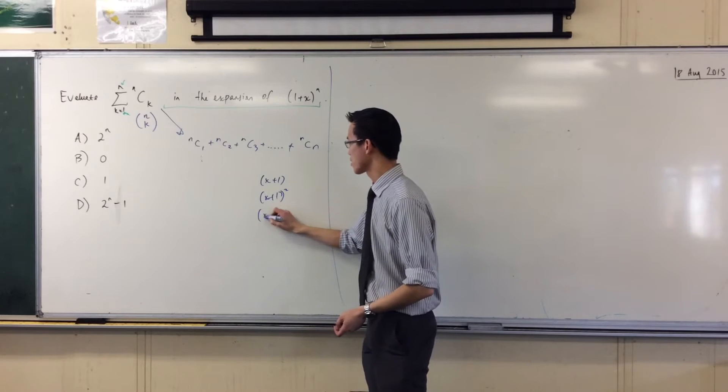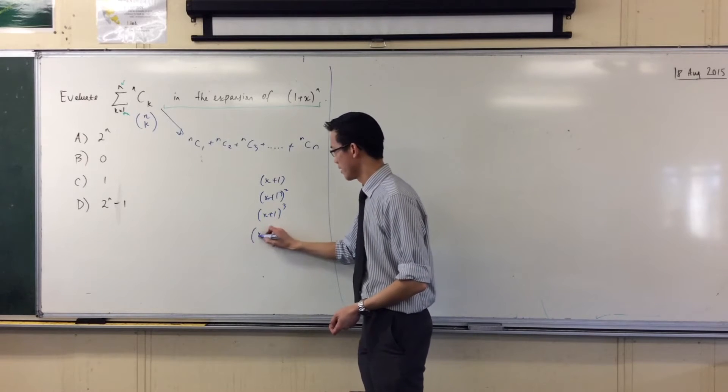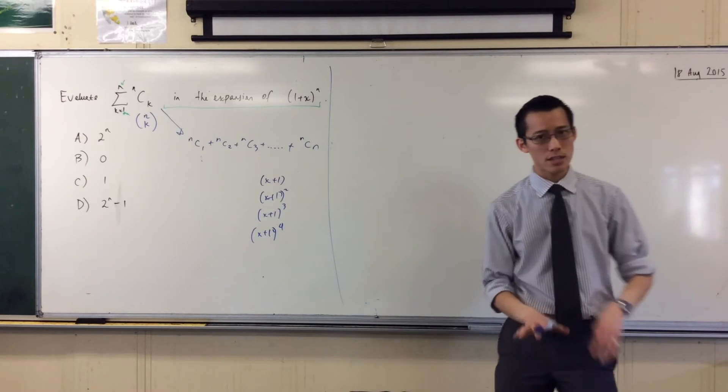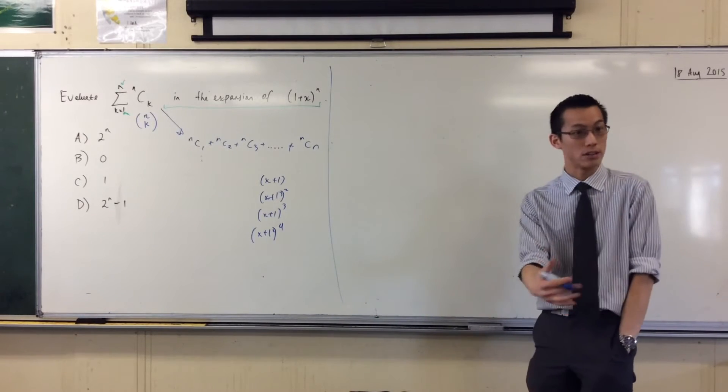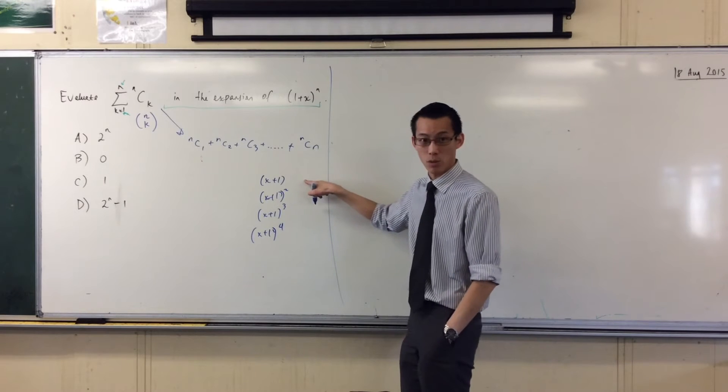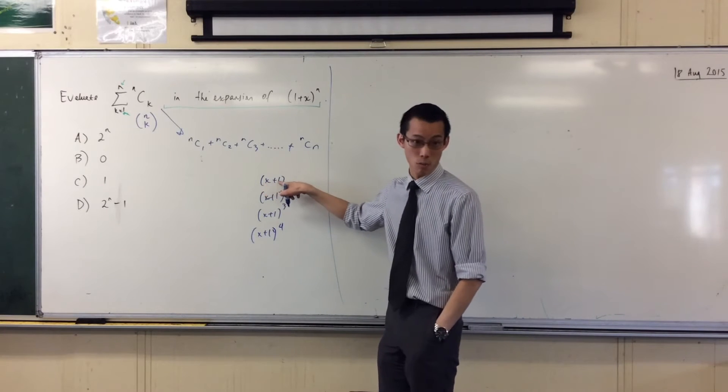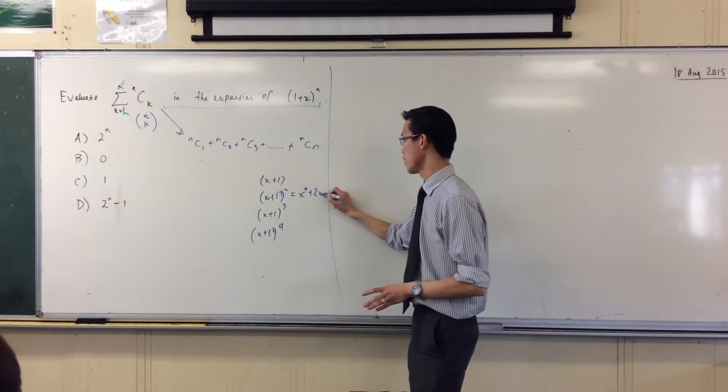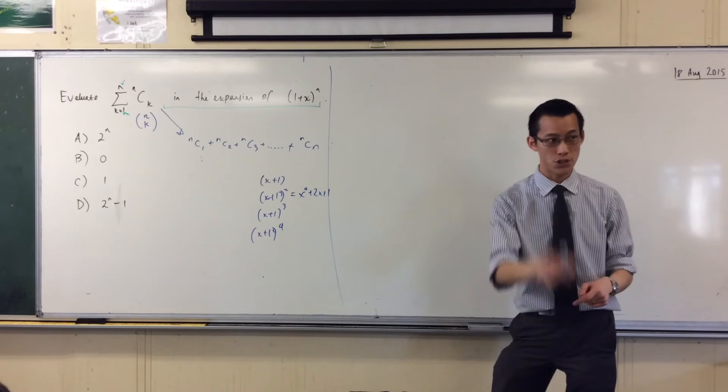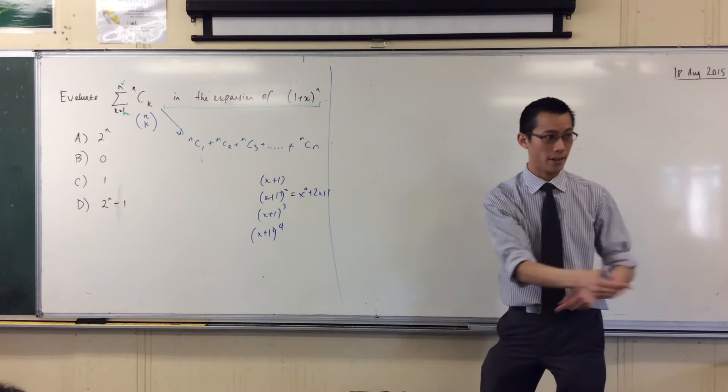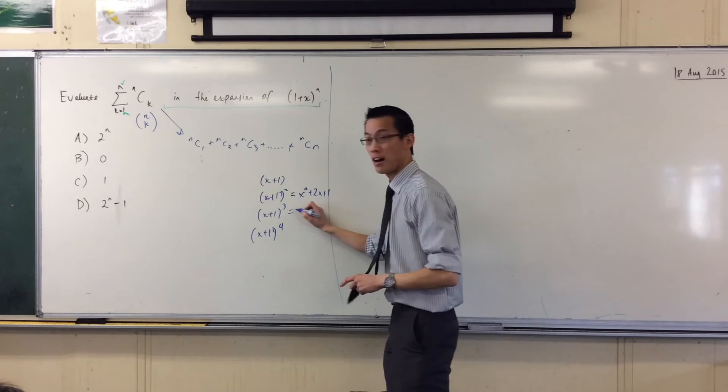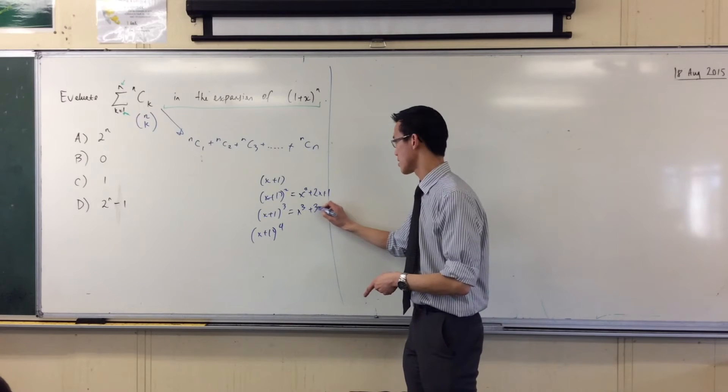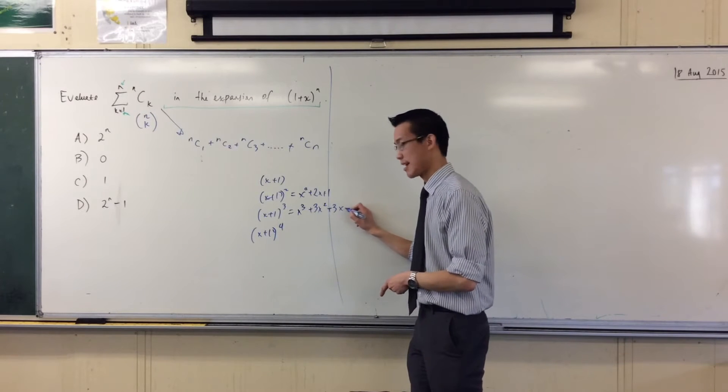If you just think about your Pascal's triangle, this is just x plus 1, so your coefficients are 1 and 1. When you expand this guy you get x squared plus 2x plus 1, so your coefficients are 1, 2, 1. You go down to the next row, help me out. Yeah, there's the 1, there's the 3, there's another 3, and then there's the 1 trailing on the end.